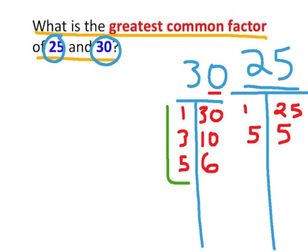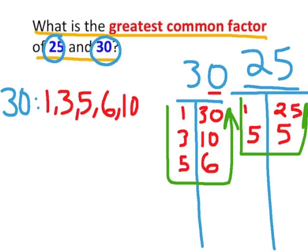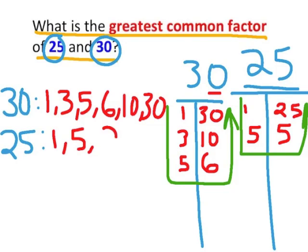I am going to draw an arrow to indicate the order we will list them. We start with 1 and work our way down to 5, then go to 6 and work our way up, and do the same with 25. So the factors of 30 in order from least to greatest are 1, 3, 5, 6, 10, and 30. The factors of 25 in order from least to greatest are 1, 5, and 25.